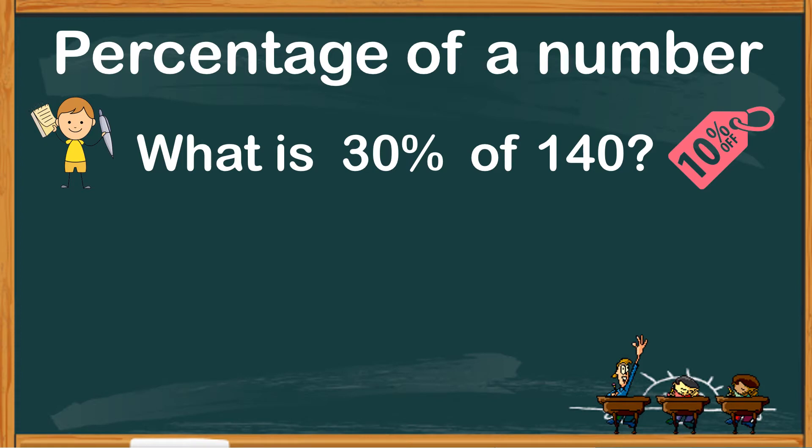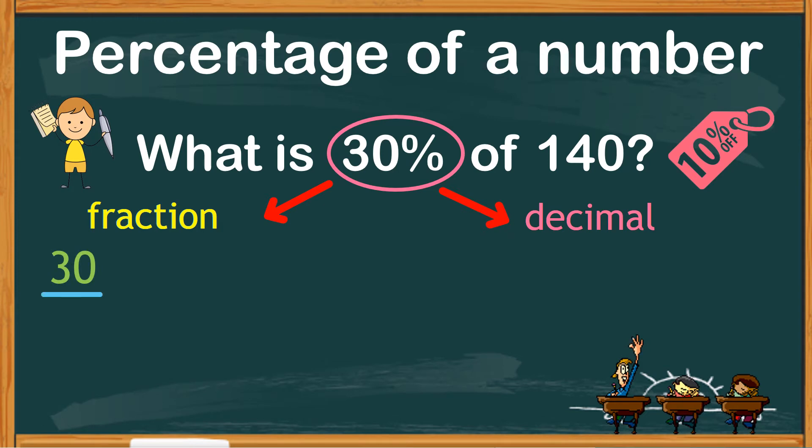There are two ways you can find the percentage of a number. You can either change the percent into a fraction or into a decimal. If you are doing it manually, changing percent into a fraction is the easiest method. In our previous video, we learned that percent is a special fraction where the denominator is always 100. So, 30% in fraction is 30 over 100, and the word 'of' means you multiply.